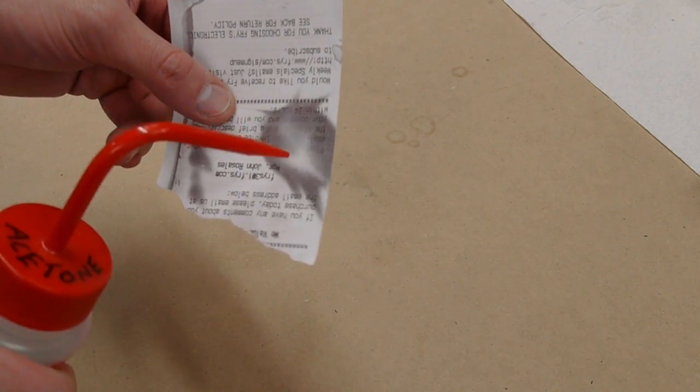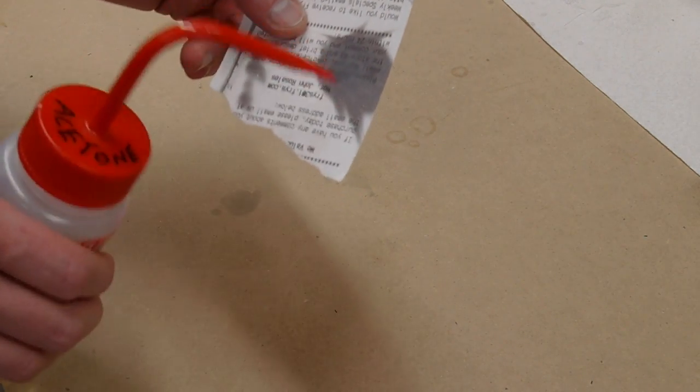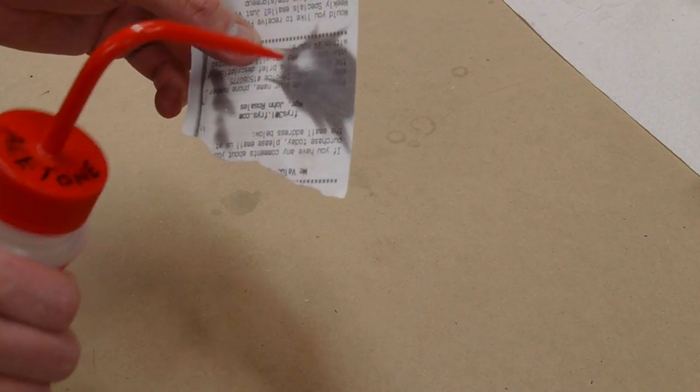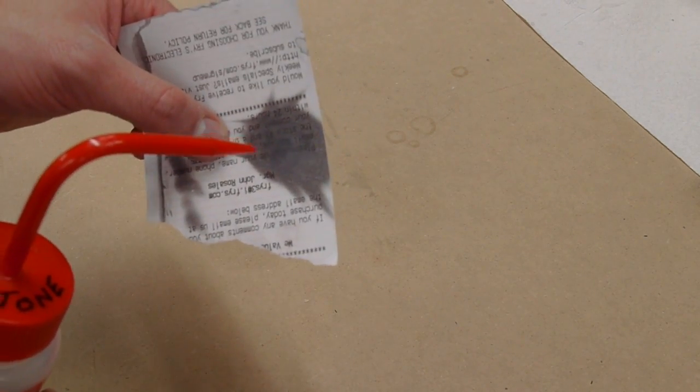These receipts have a dye in there that is destabilized by the heat, and then I guess as it cools down it stays in the dark form. So we can also try isopropyl alcohol. Here's a wash bottle with just isopropanol.